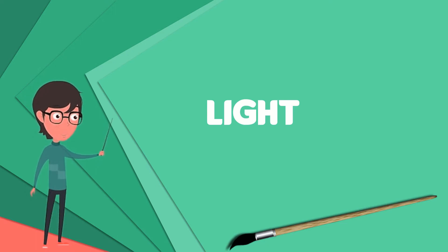The primary properties of visible light are intensity, propagation direction, frequency or wavelength spectrum, and polarization, while its speed in a vacuum is one of the fundamental constants of nature.